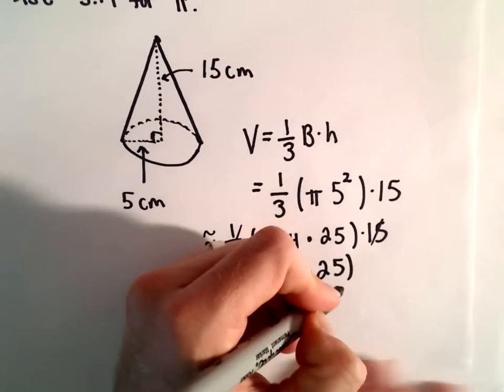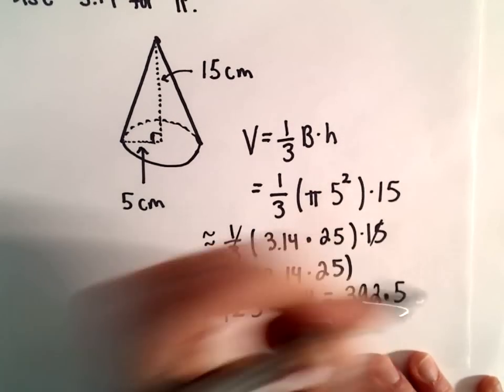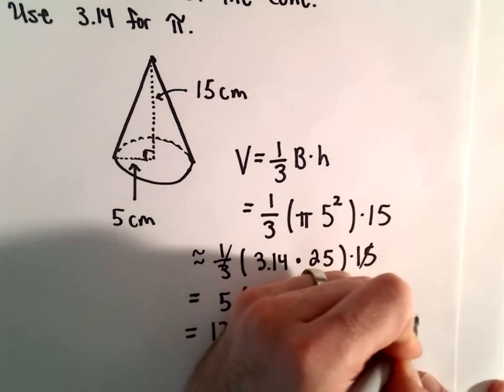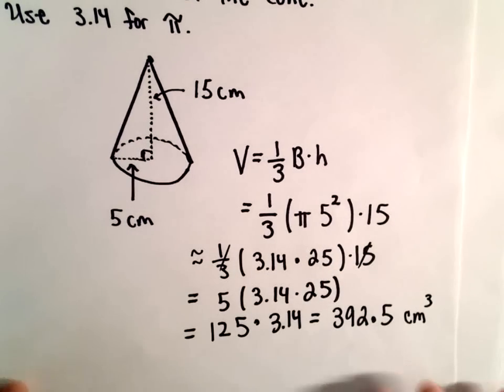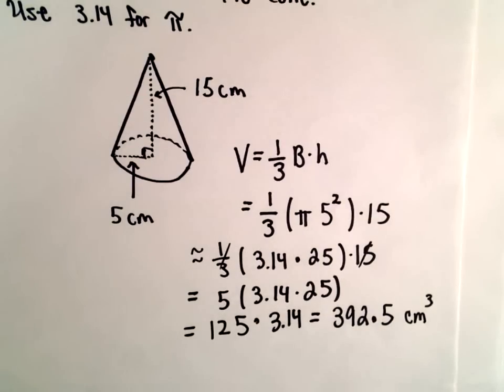I'm getting this to be equal to 392.5, and since our units were in centimeters, this will be in cubic centimeters, so our final solution here will be 392.5 cubic centimeters.